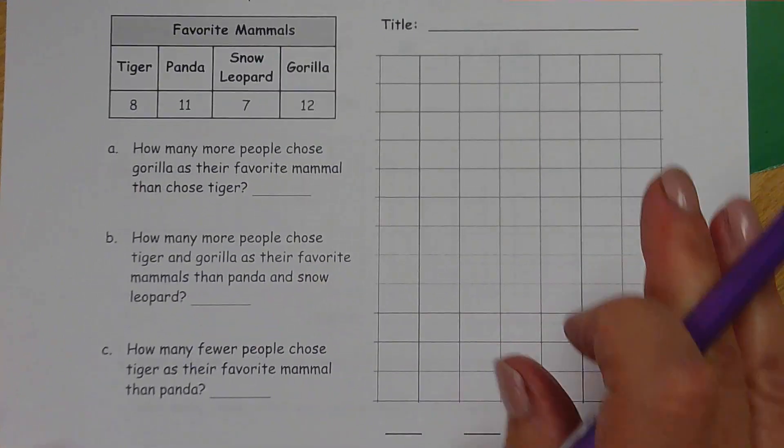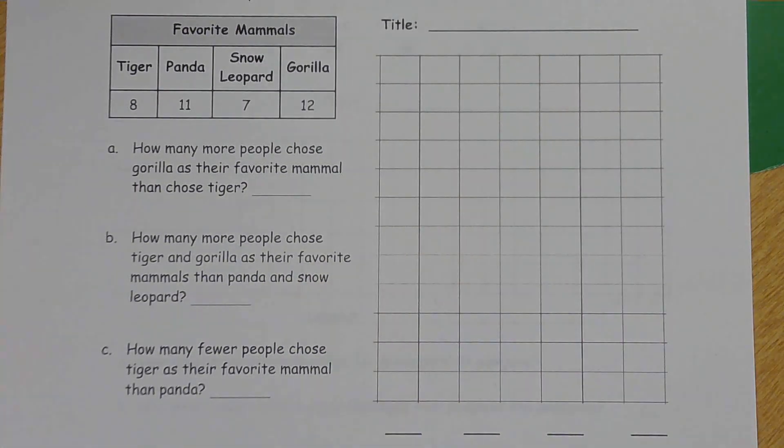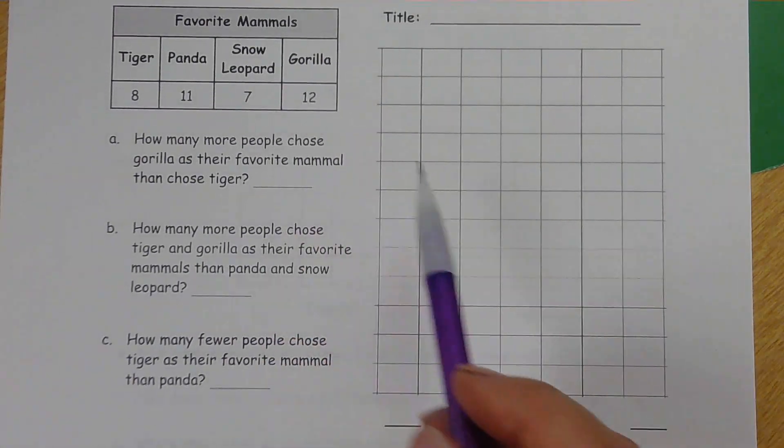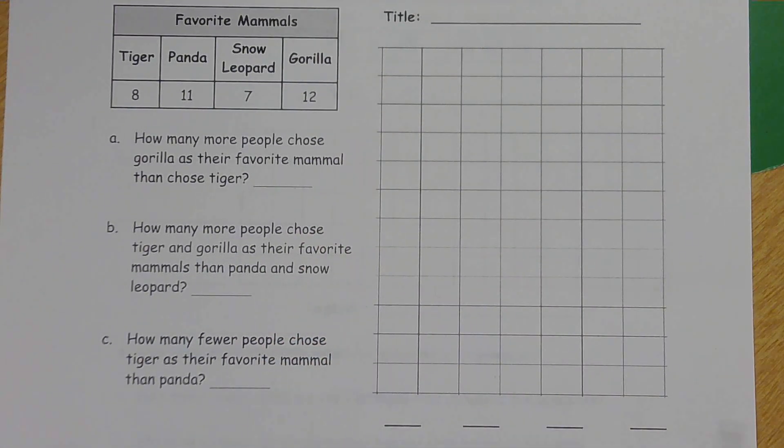We're going to be creating a picture graph using the data in this table. Now, a picture graph usually would have actual pictures in it, maybe a face or something. In this one, we're going to be drawing something much more simple because, like they said, it's not art, it's math. So we don't want to spend all of our time drawing.